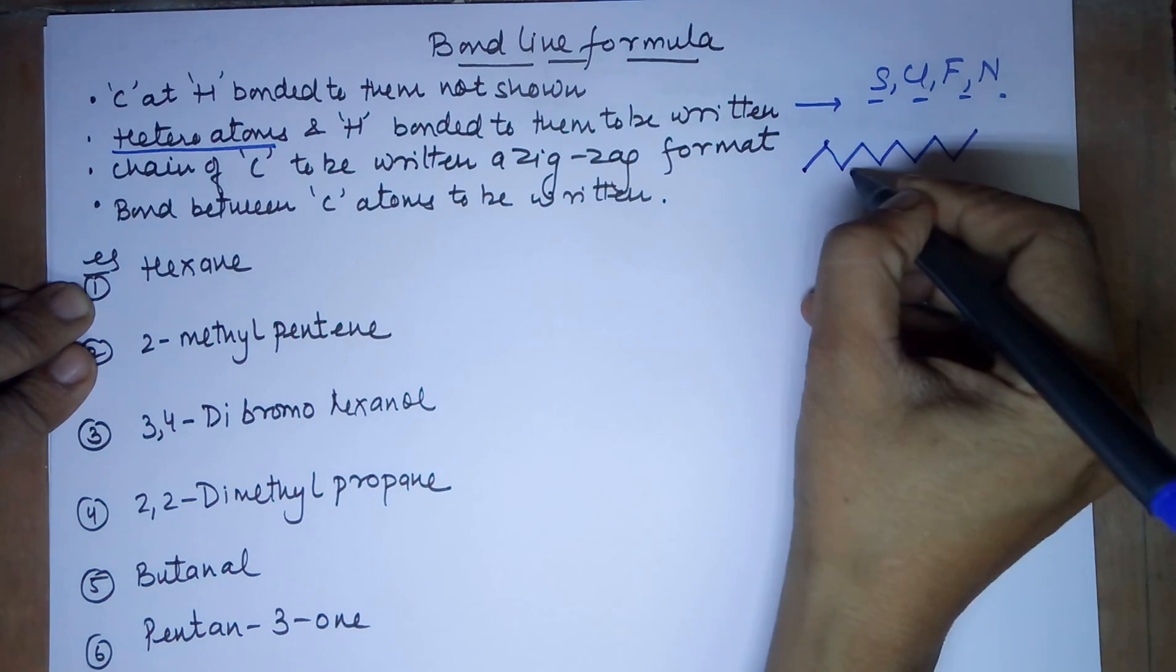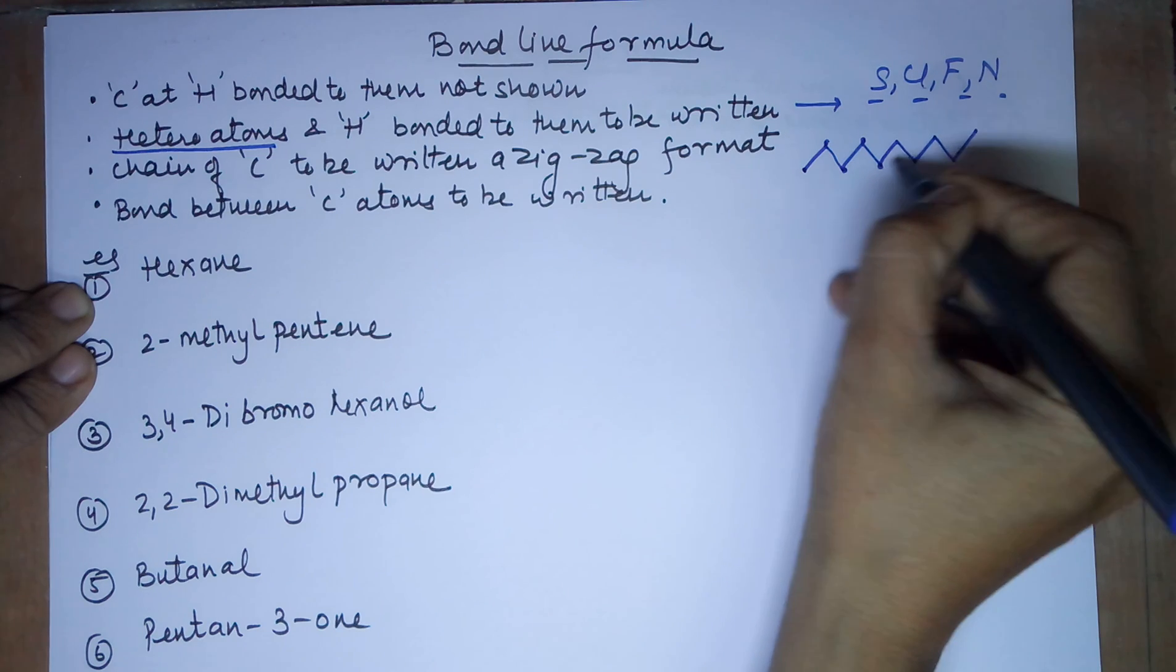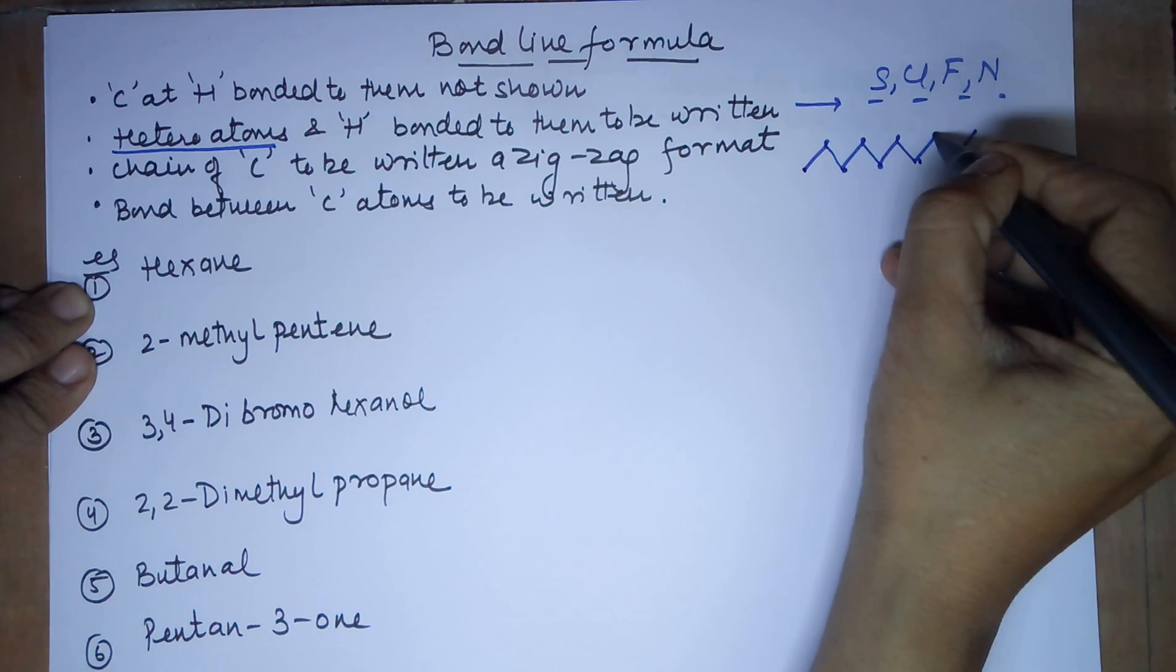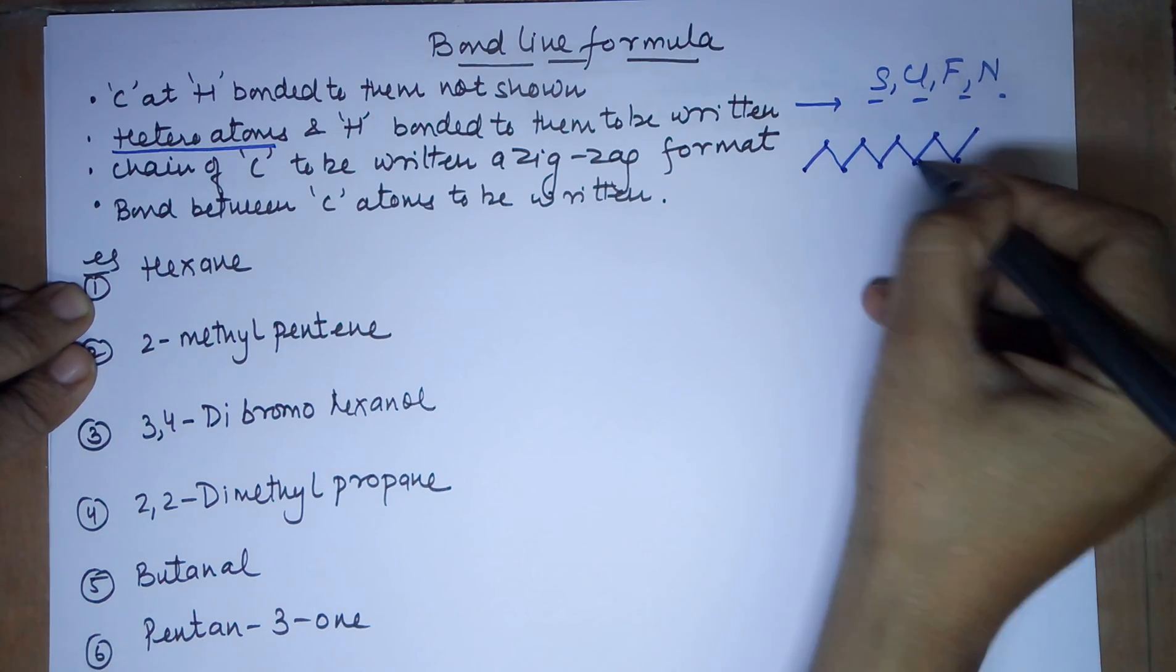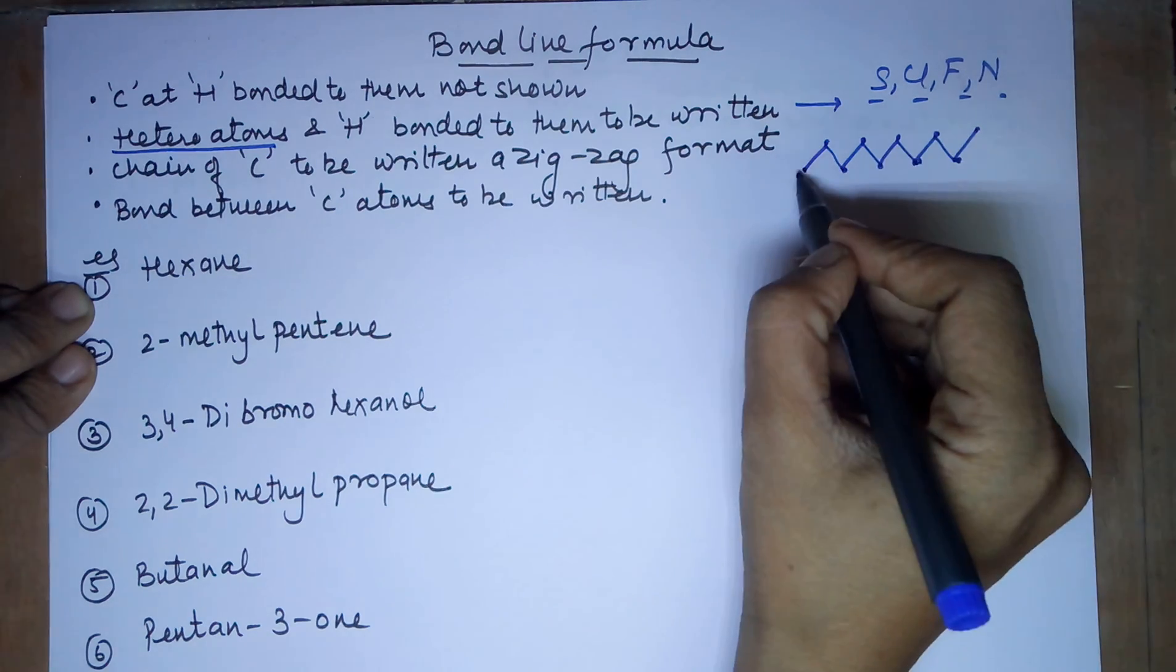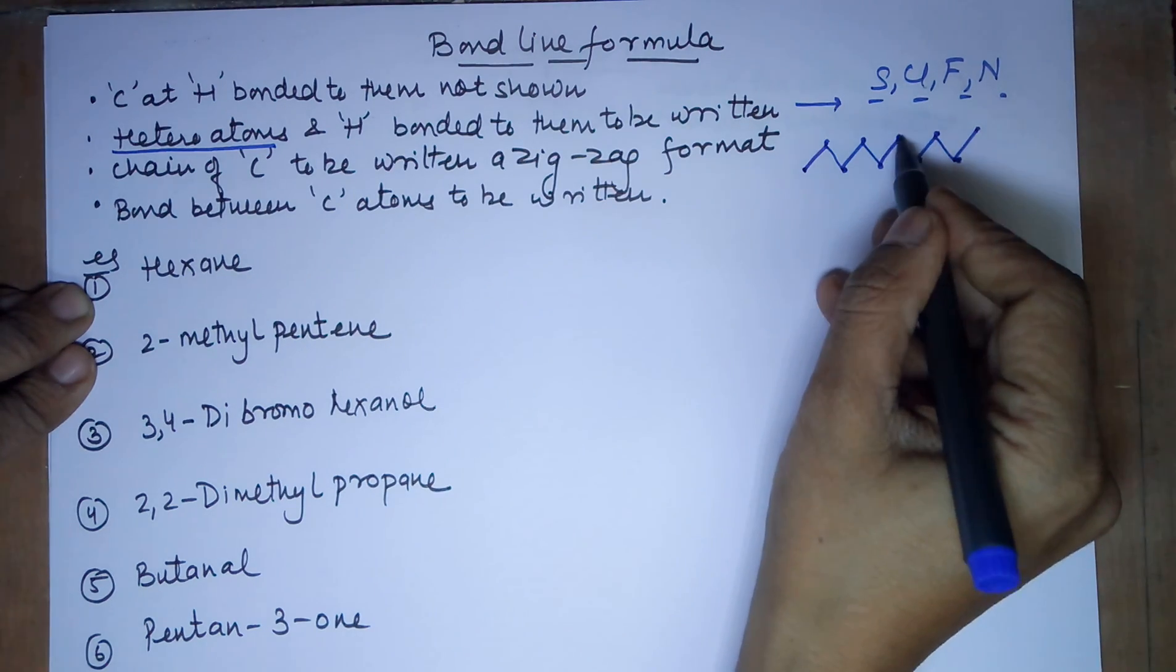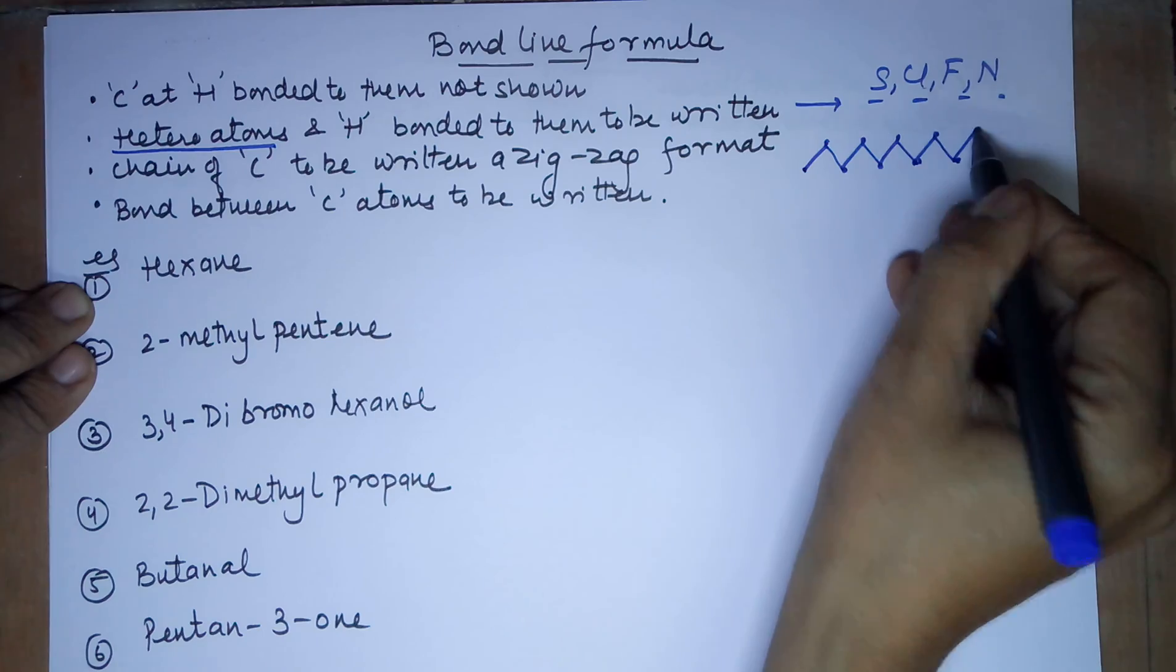Each of these vertices refers to a carbon. You don't need to put it like that, but just to make it a little more clear, you have 1 carbon, 2, 3, 4, 5 carbon, 6, 7, 8, 9 carbons and then 10 carbons.